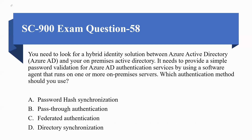Next question: you need a hybrid identity solution between Azure AD and your on-premises Active Directory. It needs to provide simple password validation for Azure AD authentication services using a software agent that runs on one or more on-premises servers. Which authentication method should you use? Option A) Password Hash Synchronization, B) Pass-through Authentication, C) Federated Authentication, D) Directory Synchronization. The correct option is B, Pass-through Authentication.